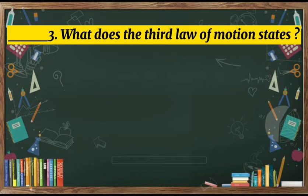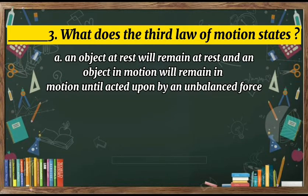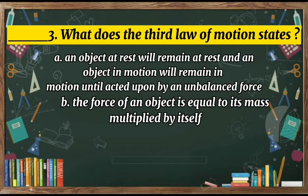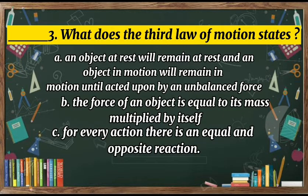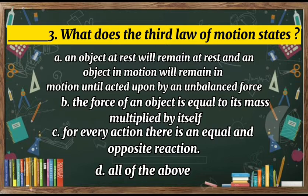Number three: What does the law of motion state? A. An object at rest will remain at rest and an object in motion will remain in motion until acted upon by a balanced force. B. The force of an object is equal to its mass multiplied by itself. C. For every action, there is an equal and opposite reaction. D. All of the above. The answer is C.